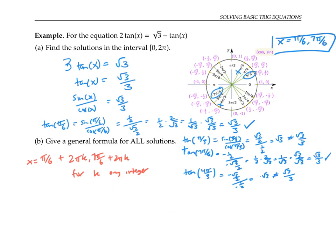This is a correct answer, but it's not as simple as it could be. Notice that seven pi over six is exactly pi more than pi over six on the unit circle. So instead of taking both of these and adding multiples of two pi to them, I could get all the same answers by just taking one of them and adding multiples of pi to it. A more efficient answer is to say that x equals pi over six plus pi times k, for k any integer. This still captures all the same solutions — when k is even, I get one family of solutions, and when k is odd, I get the other. For example, when k is one, pi over six plus pi is just seven pi over six. If you think about the fact that tangent has a period of pi instead of two pi, it makes a lot of sense that you can write the solutions in this form.